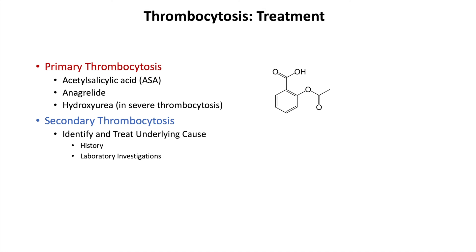In summary, treatment breaks down into primary thrombocytosis — managed with ASA, anagrelide, and hydroxyurea in severe cases — and secondary thrombocytosis, where we identify and treat the underlying cause.